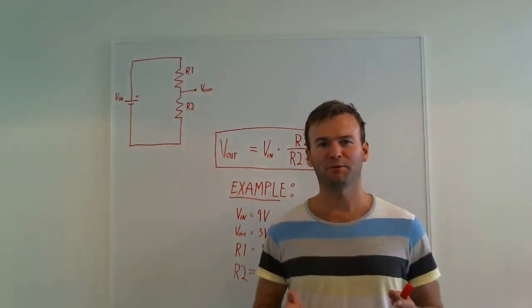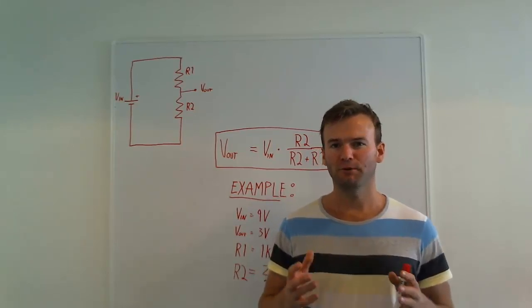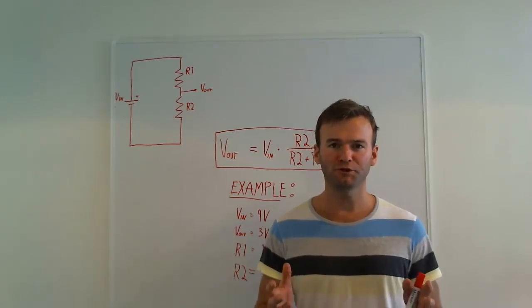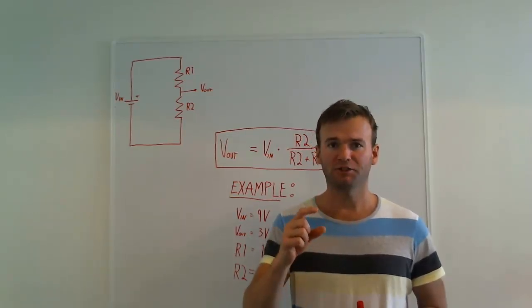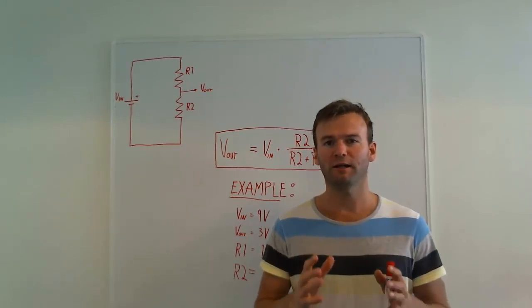With this super simple circuit you can do a lot of cool stuff. For example, you can exchange one of the resistors with a photoresistor. A photoresistor is a resistor that changes its resistance value based on the amount of light it detects.